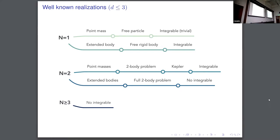Some of them are integrable. The most simple case is in which you have only one body, of course. We have a volume mass. Then we have a two-particle system. We have an extended body, a two-extended body, then the two-extended body problem, which is integrable. And for N equal to two, the two-body problem, after using some of the symmetries in the problem, reduces to the Kepler system, which is obviously integrable. That's the last one of the integrable cases.